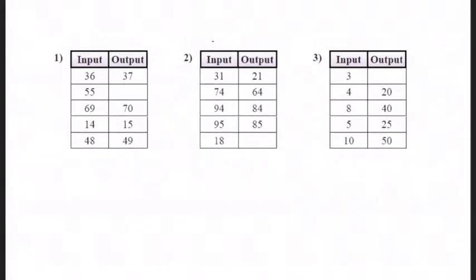So the first one, if I look at the numbers, this is my input and this is the output. So if I put 36 in, I get 37. We have to figure out this box here. If I put 69 in, I get 70. 14 in, I get 15. 48 in, I get 49. So you can see it's going up by 1. So we're adding 1.